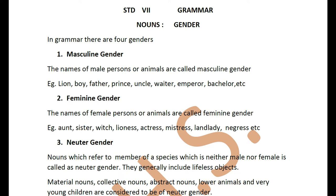Now, when you are talking of masculine gender, you are talking of anything that is male. Like, you are talking of a boy, a man, father, uncle. All these are males, and these are called masculine gender.